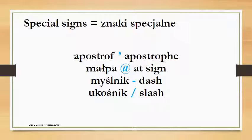So the at sign. For some reason in Poland it is called małpa. And małpa means a monkey. I'm not really sure why that is, but maybe it's because of the shape — maybe it reminded somebody of a monkey with a really long tail around it.